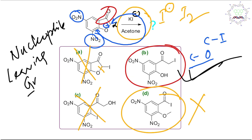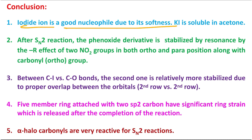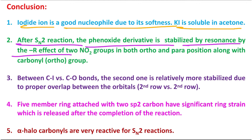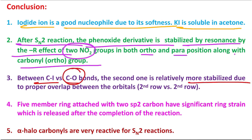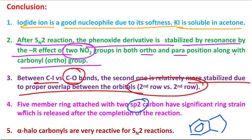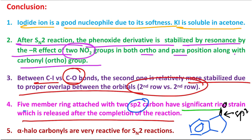In conclusion: iodide ion is a good nucleophile due to its softness, and KI is soluble in acetone. Because of this solubility and coordination of K⁺, the reactivity of the nucleophile enhances. After the SN2 reaction, the phenoxide derivative is stabilized by resonance — the minus R effect of two nitro groups in both ortho and para positions, along with the carbonyl group also in ortho position. The C–O bond is relatively more stable than a C–I bond due to proper orbital overlap. Also, the five-membered ring is attached to two sp2 centers — the benzene ring and the carbonyl — giving significant ring strain that is released upon ring opening, providing additional driving force. Alpha-halocarbonyls are very reactive for SN2 reactions.